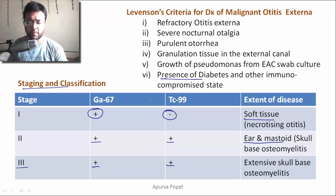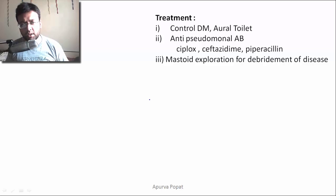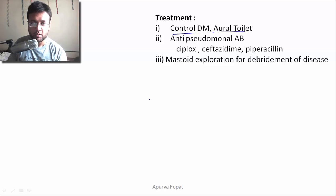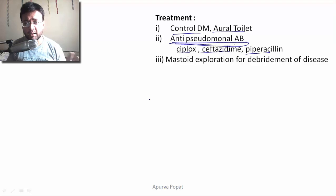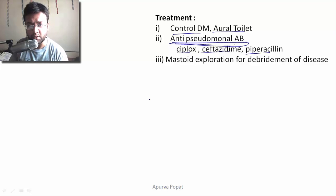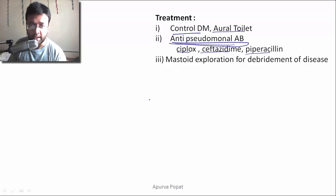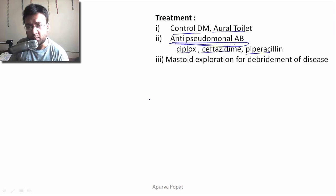Treatment: first, control the diabetes. Perform aural toilet and give anti-pseudomonal antibiotics — ciprofloxacin, ceftazidime, or piperacillin. Piperacillin is costlier, so we start with ciprofloxacin; if there is no response, we escalate to ceftazidime and then piperacillin, guided by antibiotic sensitivity reports. If there is no response to medical treatment, mastoid exploration can be performed.